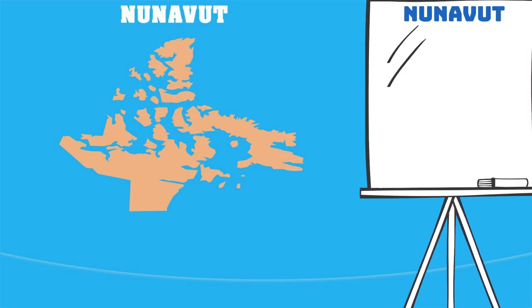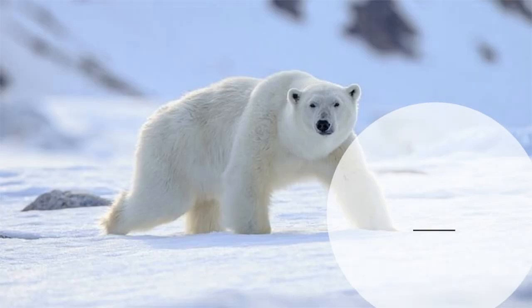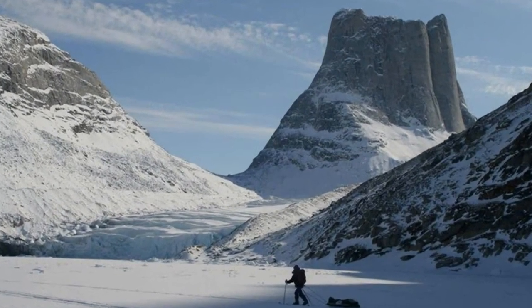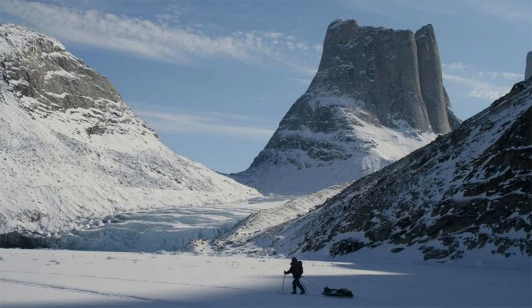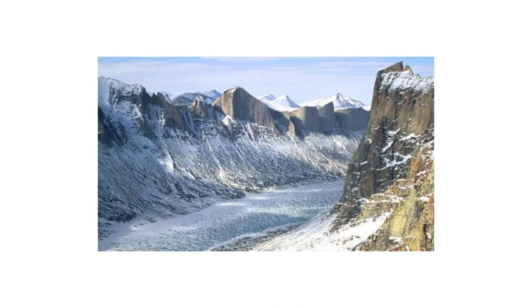When did Nunavut become a territory? On April 1st, 1999, the map of Canada was redrawn. The Northwest Territories was divided into two territories to allow for the creation of Nunavut — a homeland for Canada's Inuit. The whole territory, from the glacial mountain fjords of the east coast of Baffin Island to the rolling rock hills of the west coast of Hudson Bay, is Arctic terrain.